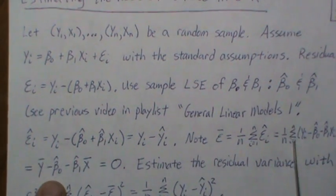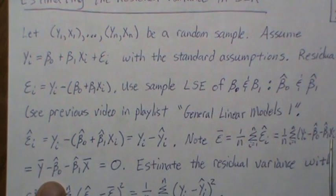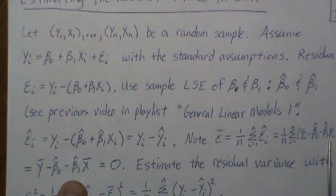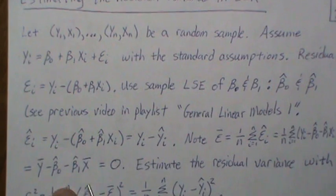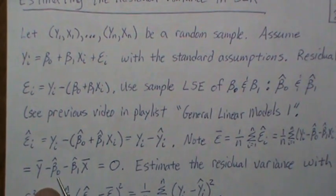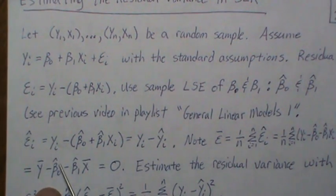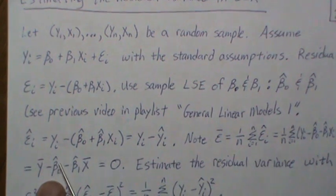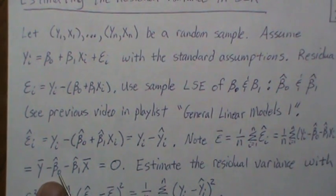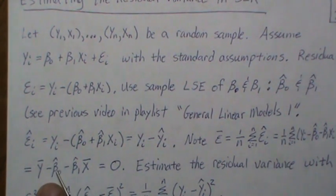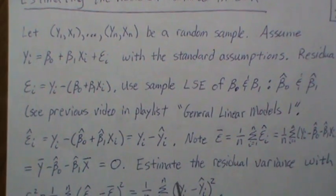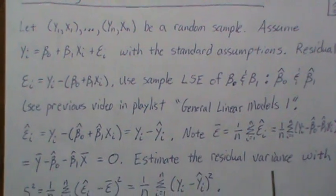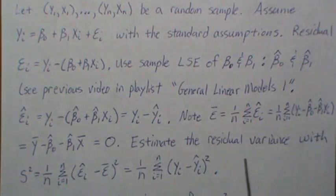Continuing, we have n times beta zero hat divided by n, which is just beta zero hat, and beta one hat times the sum of xi divided by n, which is beta one hat times x-bar. This whole expression equals zero because the estimate for beta zero hat is y-bar minus beta one hat times x-bar — plugging that in gives cancellation and zero. So epsilon-bar equals zero.